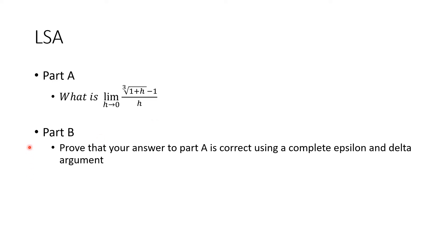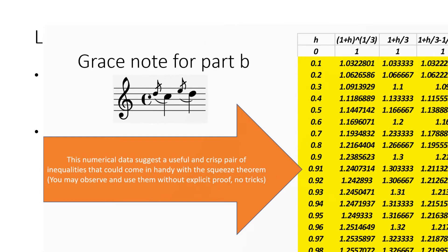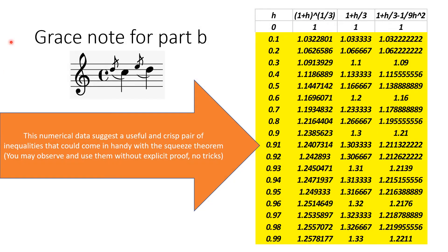Part B asks you to prove that your answer in Part A is correct using a complete epsilon and delta argument. I think this is the first time in our course, but I am giving you a grace note for this Part B because of the nature of the problem.